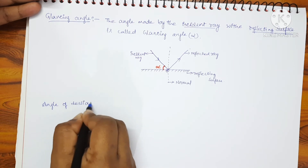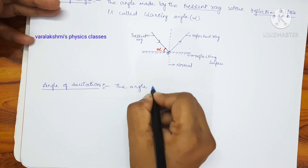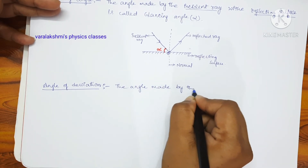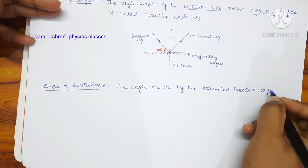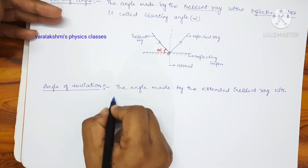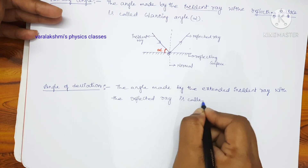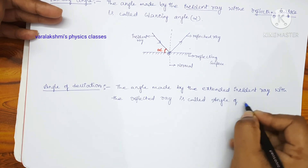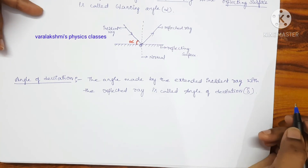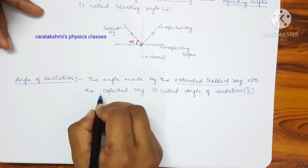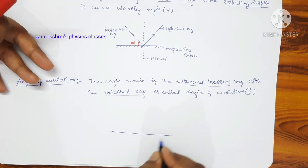Now let us see the angle of deviation. The definition for the angle of deviation is: the angle made by the extended incident ray with the reflected ray is called the angle of deviation, and it is denoted with the symbol delta. Let us consider a plane mirror.